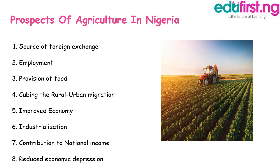Prospects of agriculture in Nigeria: agriculture is a source of foreign exchange, it serves to create employment, it helps in the provision of food, and it helps in curbing rural-urban migration when more people are encouraged to remain in rural areas. Agriculture helps to improve the economy, it leads to industrialization, it contributes to national income, and it reduces economic depression.